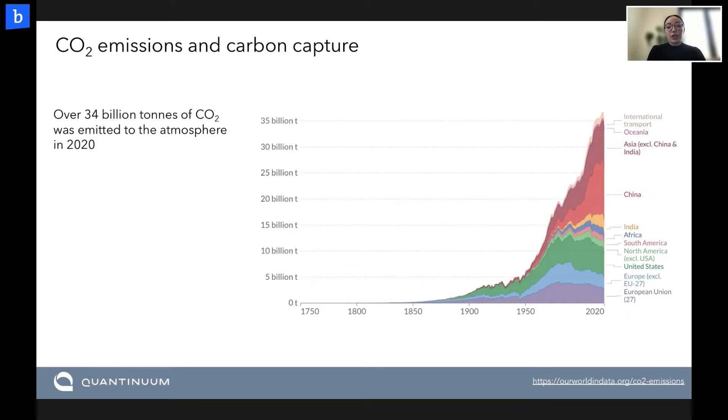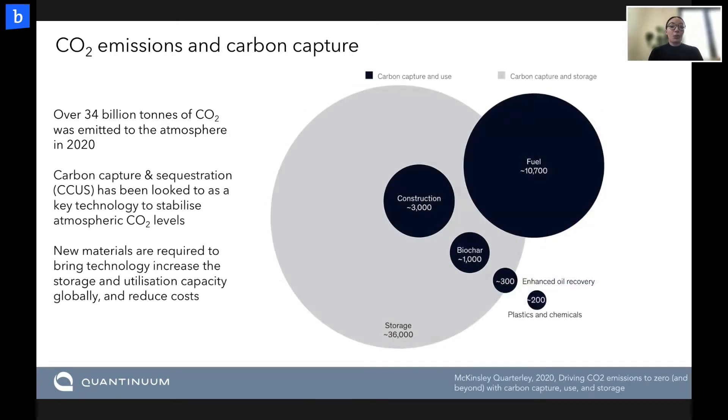So in terms of the motivation for this work, as we all know, CO2 emissions have been increasing very rapidly over the past 100 or so years. And in fact, 34 billion tons of carbon dioxide was emitted into the atmosphere in 2020, which is obviously a massive amount and is a huge problem in our lifetime at the moment. With many governments and corporations now pledged to reduce CO2 emissions, there's been a huge influx of research into both new renewable energy technologies and also alternative methods such as carbon capture and sequestration.